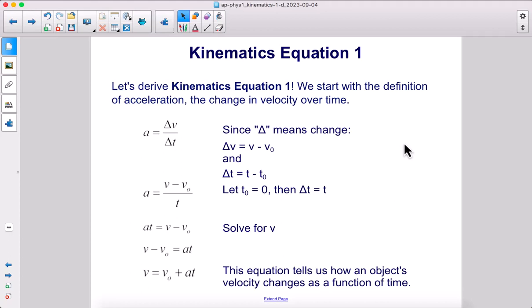Let's derive kinematics equation one. We start with the definition of acceleration: the change in velocity over time. Remember, delta V means change in velocity. Change in velocity is final minus initial, so we get V minus V-naught in the numerator. We're going to assume that the initial time is zero. Therefore, T minus T-naught goes away, and we are just left with the time span, the final time.